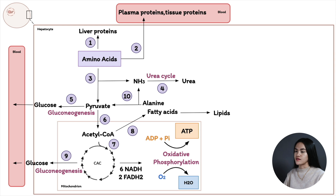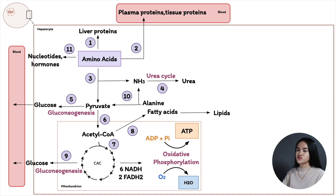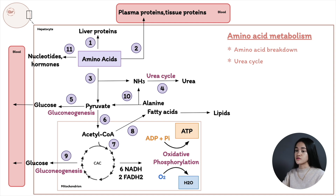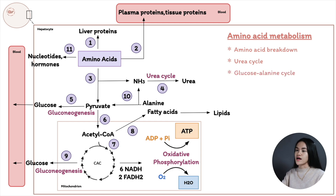Amino acids are also precursors in the synthesis of nucleotides and hormones. To summarize amino acid metabolism: we have amino acid breakdown producing pyruvate, acetyl-CoA, and citric acid cycle intermediates; the urea cycle converting ammonia to urea for excretion; the glucose-alanine cycle; and hormone and nucleotide synthesis.